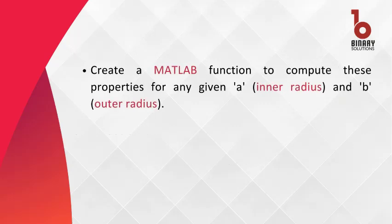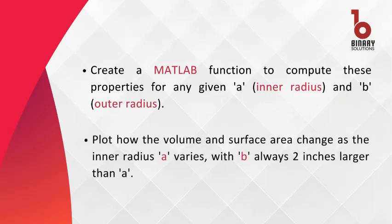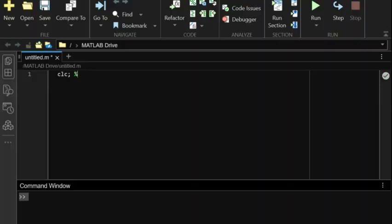Our goal is to create a MATLAB function that computes these for any given inner radius a and outer radius b. But that's not all — we'll also plot how these properties change as we vary the inner radius a, while keeping the outer radius exactly two inches larger than a. In our script we start by clearing the workspace with clc and clear all.